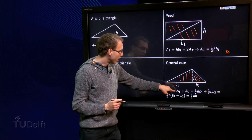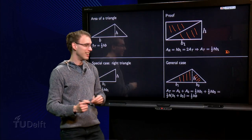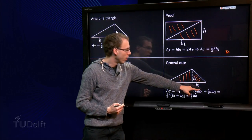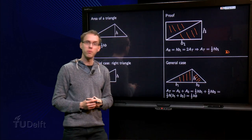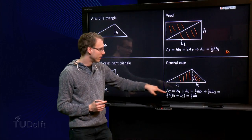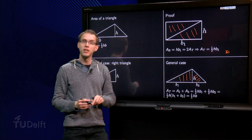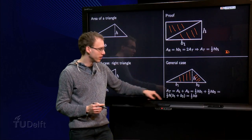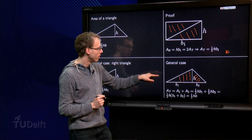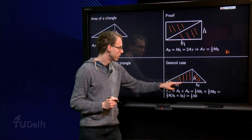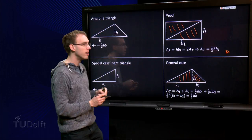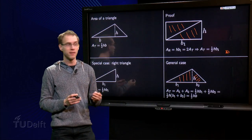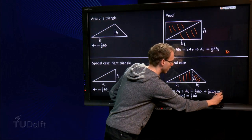And I know the area of the first one, because it is a right triangle, equals one-half h b1. I can add the second one, one-half h times b2. And then we can take out the one-half h, because they come in both terms. So we get one-half h times b1 plus b2, and b1 plus b2 equals b, the b over there. So the area of my triangle equals one-half h times b. And that concludes our proof for the triangle.